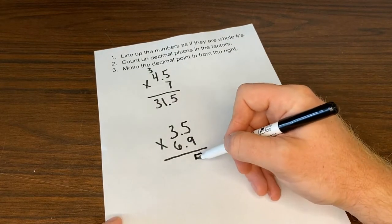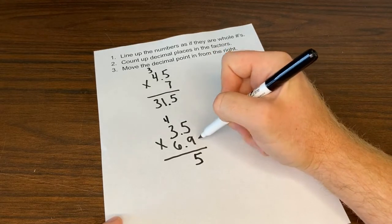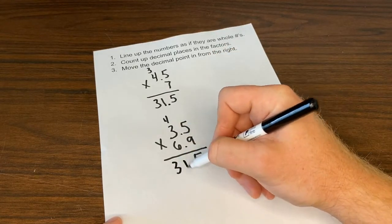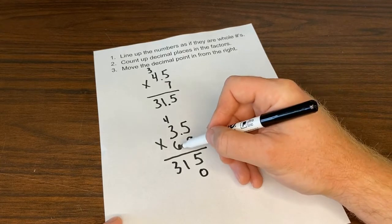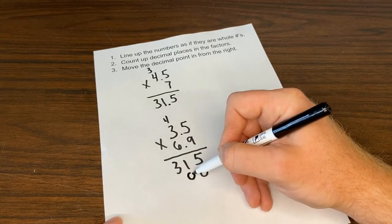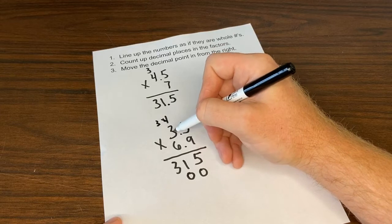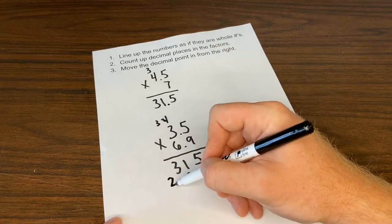5 times 9 is 45. Drop the 5, carry the 4. 9 times 3 is 27, plus 4 more is 31. Add my 0 placeholder. 6 times 5 is 30. 6 times 3 is 18, plus 3 more is 21.